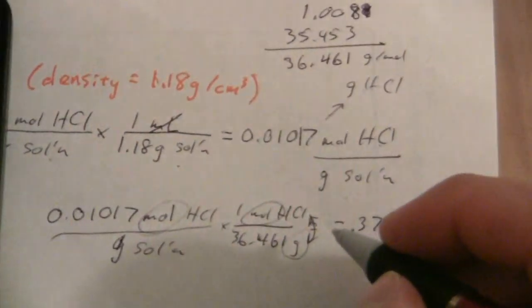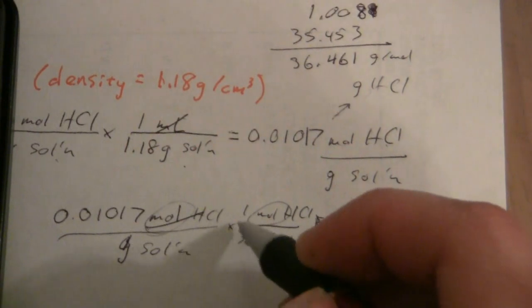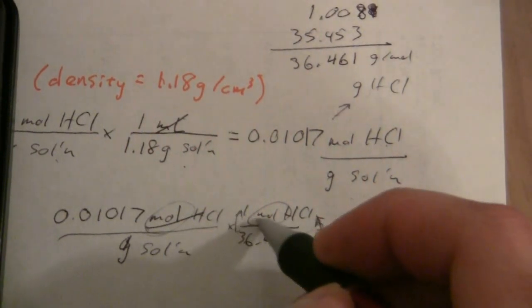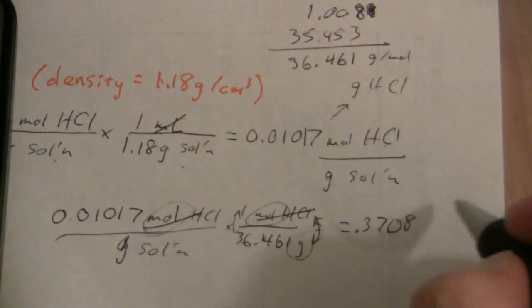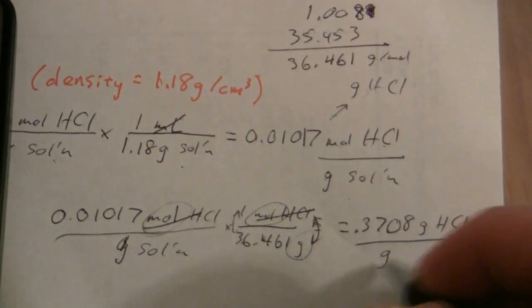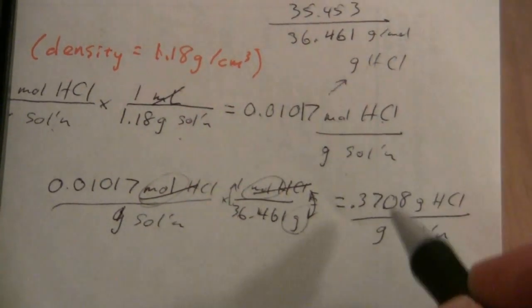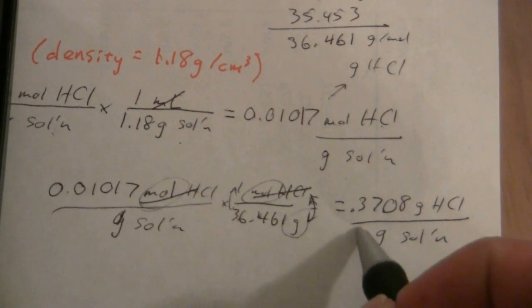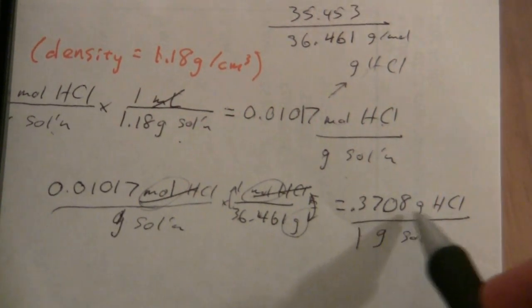And the units this time, the moles will cancel because I have this now on the top and the moles is on the bottom, and I'll have grams of HCl per gram of solution. Okay, so in one gram of the solution I have 0.3708 grams of HCl.